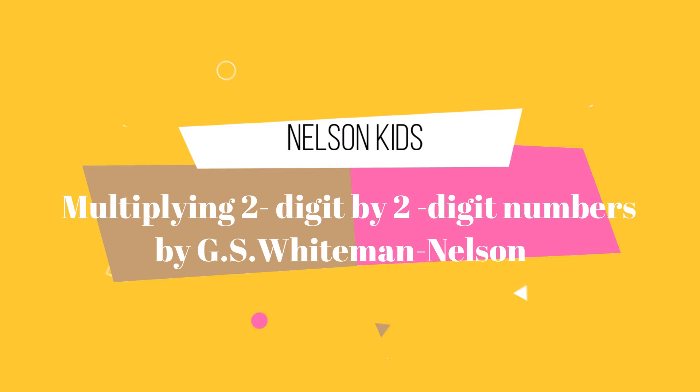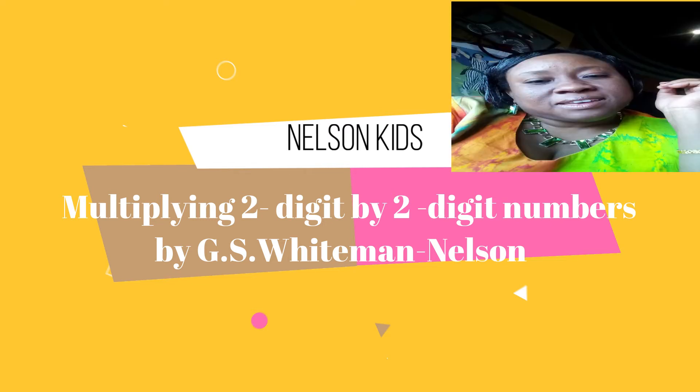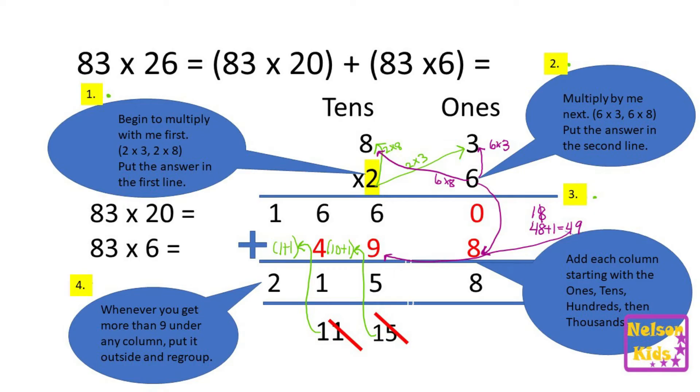Welcome to Nelson Kids series. The first thing you must understand is that multiplication is about putting things in groups. When you're multiplying a two-digit by a two-digit number, what is important is that you separate the first number and the second number.